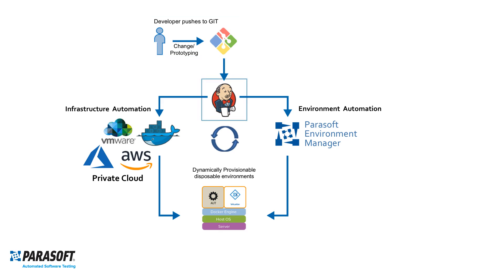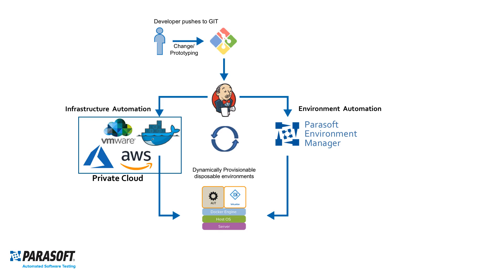That build system can then deploy everything that we need in order to do continuous testing. It would start by doing infrastructure automation to build, either on-premise or up in a private cloud, some kind of virtual machine. That virtual machine would then host the application that we're going to test. Now that application is going to need its dependencies, and we can use virtual services to fill in those gaps.